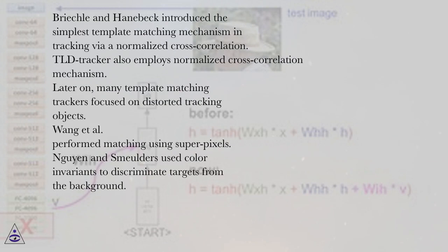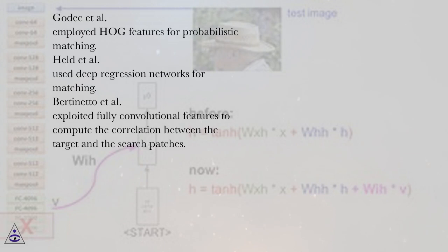Godec et al. employed HOG features for probabilistic matching. Held et al. used deep regression networks for matching. Bertinetto et al. exploited fully convolutional features to compute the correlation between the target and the search patches.